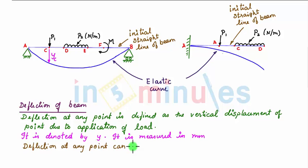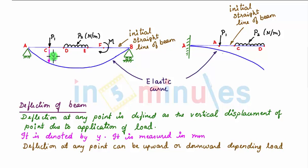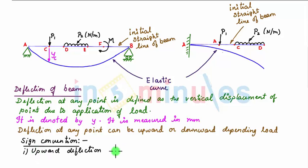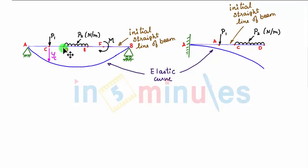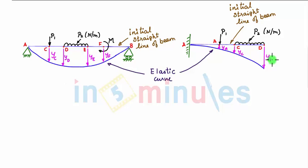The deflection at any point can be upward or downward from the initial straight line depending upon the load. We see that deflection at point C is downward. We assign a sign convention: upward deflection is considered positive and downward deflection is considered negative. So deflection at point C, y_C, is negative. Similarly, deflections at points D, E, and F in the simply supported beam and at A, C, and D in the cantilever beam — denoted as y_D, y_E, y_F, y_A, y_C, and y_D respectively — are all downward, hence negative deflections.